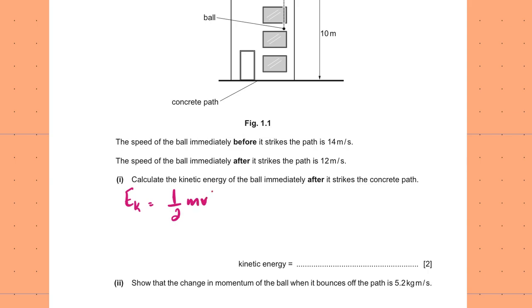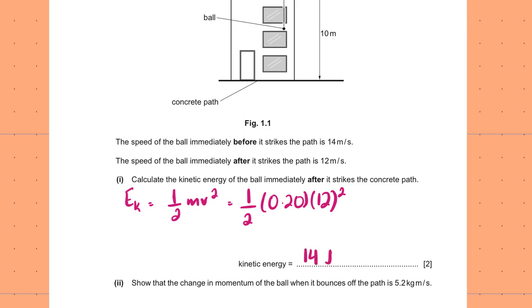So KE = ½mv². Mass was given as 0.2 kg and the velocity after is 12 m/s, so this is 12 squared. Plugging in these values we get 14 joules of kinetic energy after the collision. This is also really straightforward.